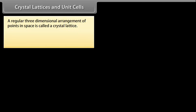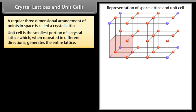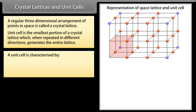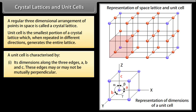A regular three dimensional arrangement of points in space is called a crystal lattice. Unit cell is the smallest portion of a crystal lattice which when repeated in different directions generates the entire lattice. Unit cell is characterized by its dimensions along the three edges A, B and C. These edges may or may not be mutually perpendicular.